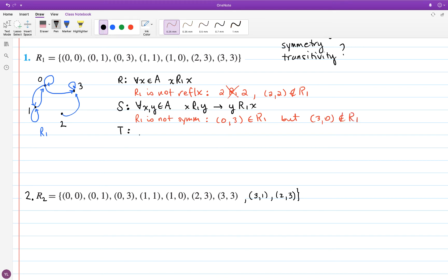Finally, transitivity. Let's recall what we would need to have in order for R1 to be transitive. Anytime x is related to y and y is related to z, I must have that x is related to z. Let's check it out. You just got to look at all the arrows and see what you can find.